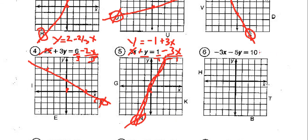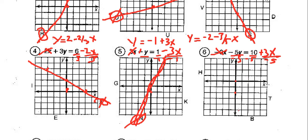Number 6. Let's add 3x to both sides, then divide everything by -5. That gives us y = -2 - (3/5)x. The intercept is going to be at negative 2. The slope is negative 3 fifths — down 3 over 5: 1, 2, 3, 4, 5 — basically right into the H. So question 6 will be H.